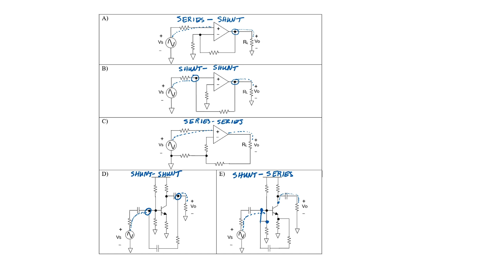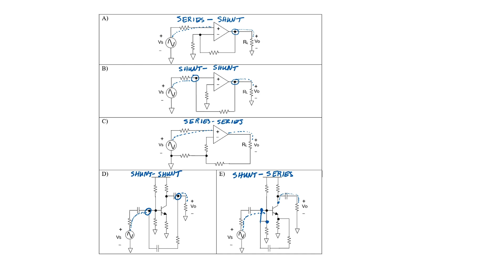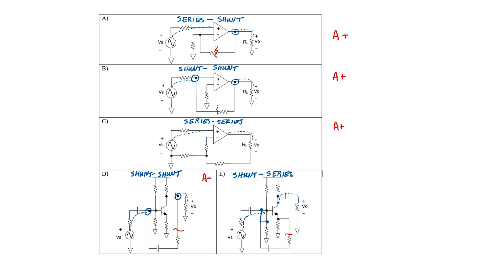A is relatively easy to identify — let's identify A by imagining that the feedback is missing. In the first circuit, imagine there's no resistor. In that situation, we have a non-inverting amplifier, so the gain would be positive. The same thing is true in the second amplifier: the amplifier is non-inverting, so A would be positive. The same is true in circuit C. Without the feedback path in circuit D, we have a standard common-emitter configuration. The common-emitter configuration is an inverting amplifier, therefore A would be negative. The same is true for circuit E — if the feedback path is broken, then A would be negative.